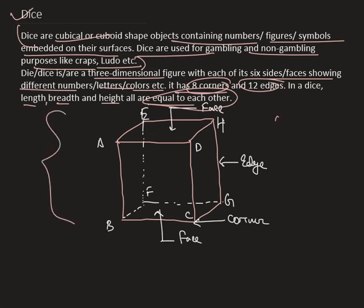This is a pictorial representation of a dice. As we can see, these are the faces and these are the corners and these are the edges.